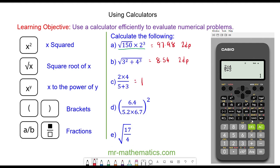For question d we're going to use the fraction. We have 6.4 on the numerator, we press the down button for the denominator and we have 5.2 multiplied by 6.7, and then we get out of that fraction, we close the brackets.